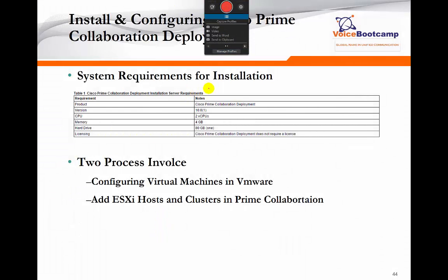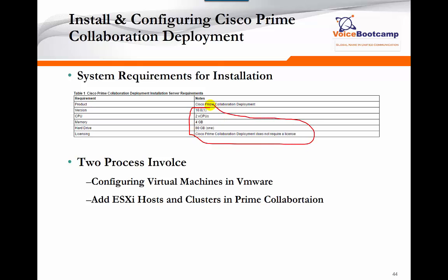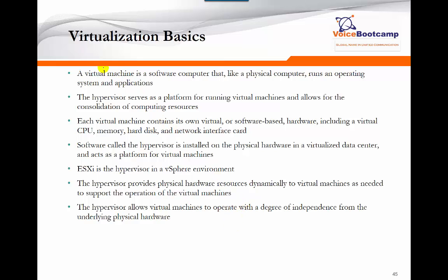To install Prime Collaboration itself, the process involves first creating a virtual machine in VMware, then adding the host and creating clusters in Prime Collaboration. A virtual machine is a software computer that acts like a physical computer but runs an operating system and applications. A hypervisor — like VMware — is a platform for running those virtual machines and allows consolidation of computing resources, where multiple VMs share the same CPU, memory, and network interface card. The VMware hypervisor (ESXi) is installed on physical hardware and acts as a platform for all virtual machines.